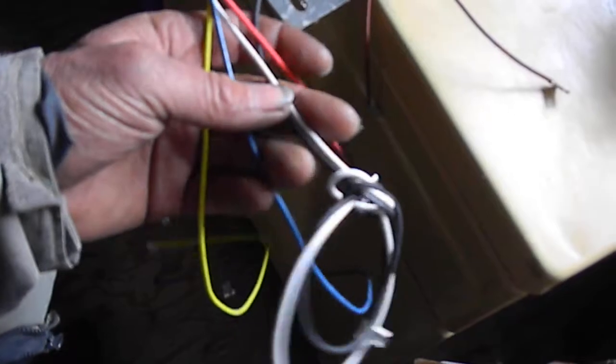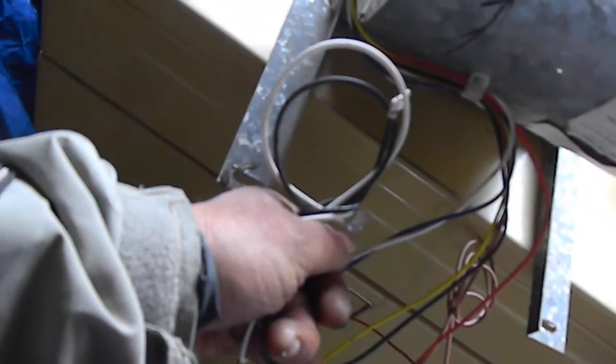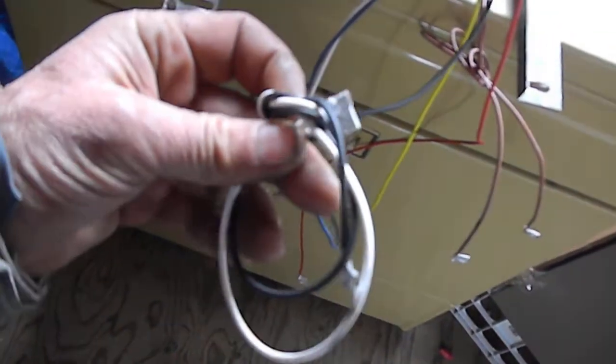The other wires are all different speeds. Basically, we're going to hook it up: the white is the primary, goes directly from the wall; the black will go to the control. So the black is the high speed.